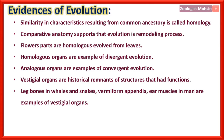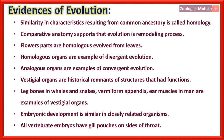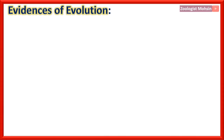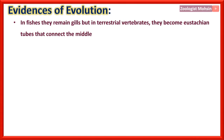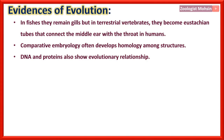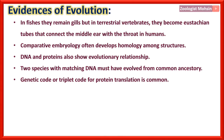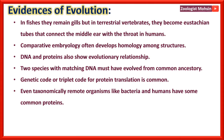Embryonic development is similar in closely related organisms. All vertebrate embryos have gill pouches on the side of the throat during early development. In fishes they remain as gills, but in terrestrial vertebrates they become eustachian tubes connecting the middle ear with the throat in humans. Comparative embryology often reveals homology among structures. DNA and proteins also show evolutionary relationships: two species with matching DNA must have evolved from a common ancestor. The genetic triplet code for protein translation is common among different organisms, and even taxonomically remote organisms like bacteria and humans share some common proteins or genes.